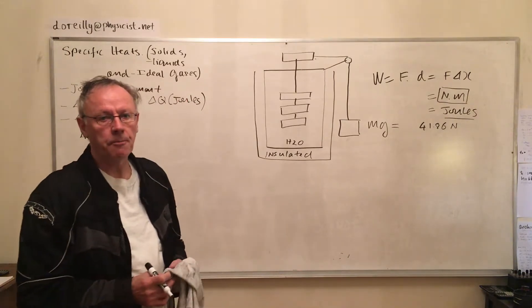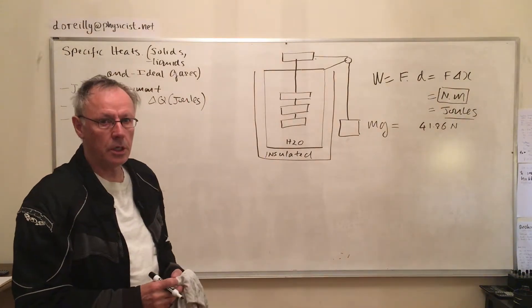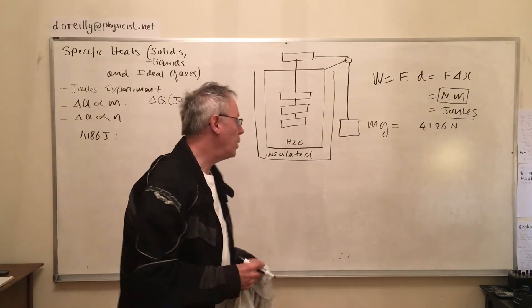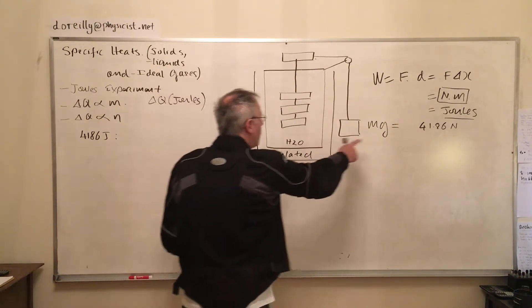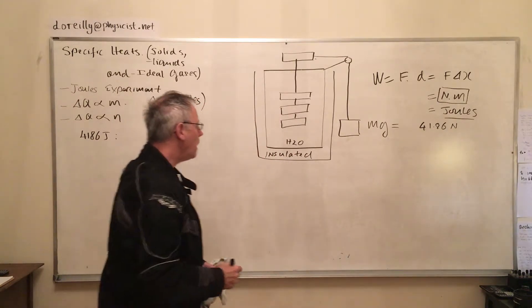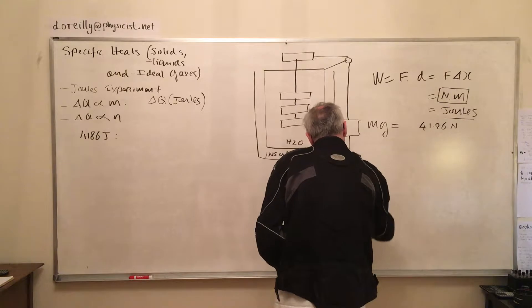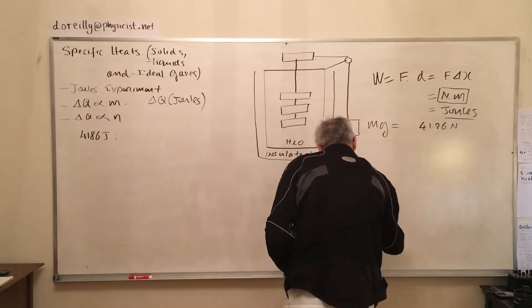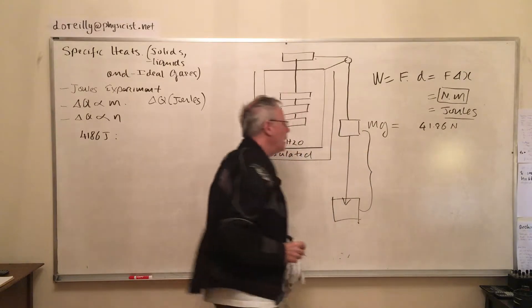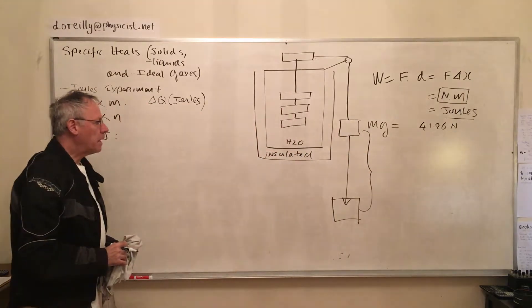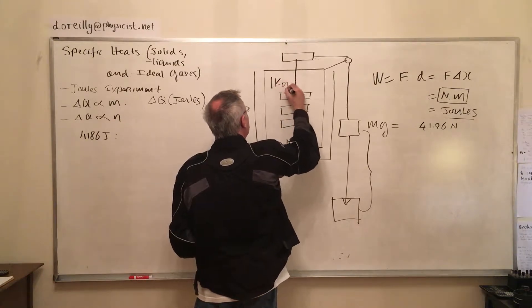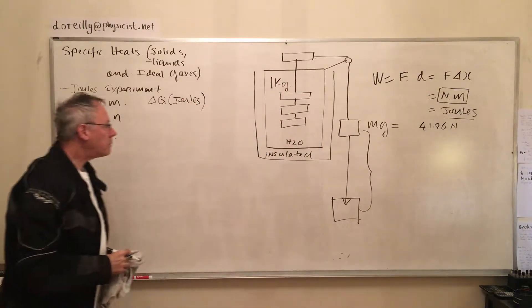It's sort of a toss and turn - which should we use? Should we use newton meter? We use newton meter for work done, and we use joules for energy stored, or lost, or gained, or whatever. So here's the weight, 41.86 newtons.